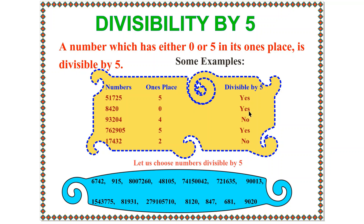The next number is 9320. Its 1s place is 4. Since 4 is neither 0 nor 5, it is not divisible by 5. The next number is 762905. Its 1s place is 5, so it is divisible by 5. Similarly, the next number is 17432. Its 1s place is 2. Therefore, it is not divisible by 5.